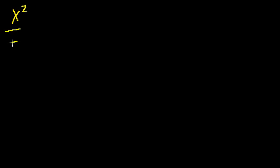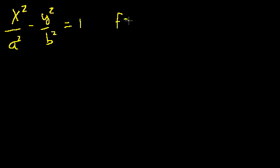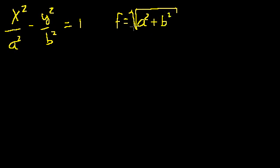In the last video, I told you that if I had a hyperbola with the equation x² / a² minus y² / b² = 1, the focal distance for this hyperbola is equal to the square root of the sum of these two numbers — the square root of a² + b². In this video, I really just want to show you that.